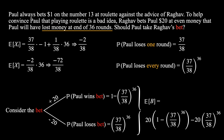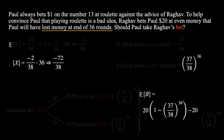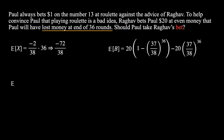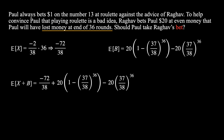Now that we have Paul's expected value from the roulette wheel as well as from Raghav's bet, we can combine these two to find the overall expected value for Paul if he takes Raghav's bet. Using linearity, we simply add up these two expected values. Evaluating this, we get a positive expected value of $2.79. Therefore, Paul should take this bet.